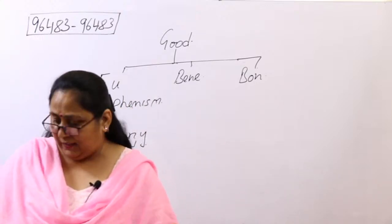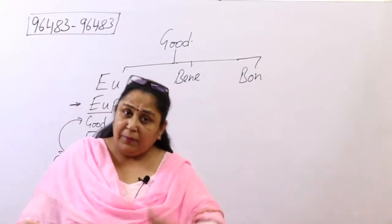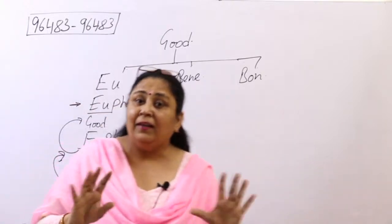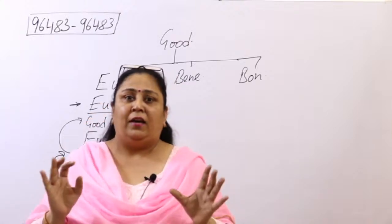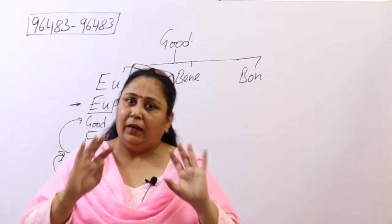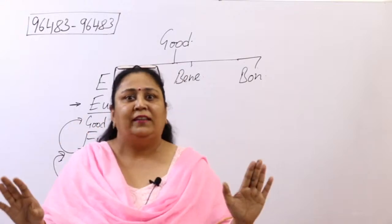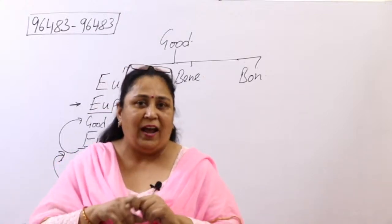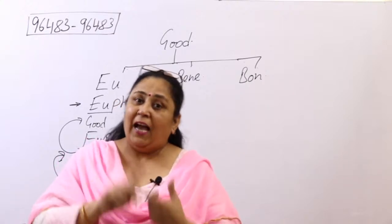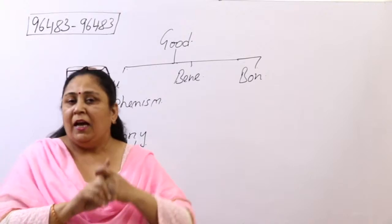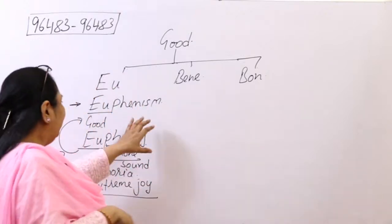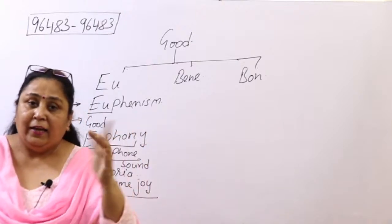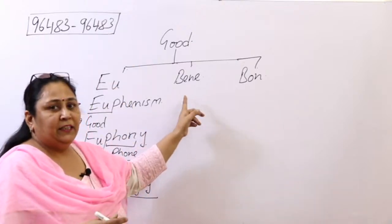Learning etymology is not a herculean task — it is actually a cakewalk. You do not have to memorize vocabulary; you just need to understand it. Cramming is very difficult, but if you understand the roots, you get absolute clarity. It is not a hard nut to crack. Once you grasp the roots, the meanings come to you automatically.